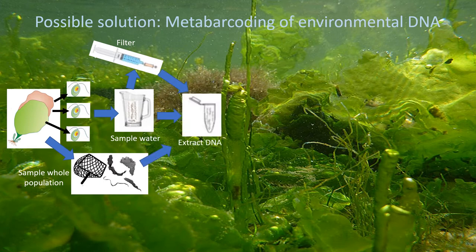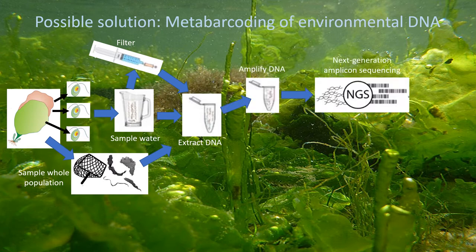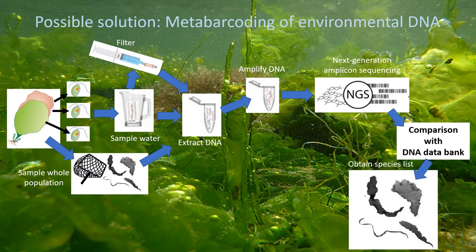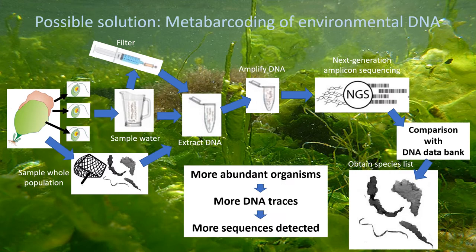Samples generated in such ways can be DNA extracted, the tufA gene can be amplified and sequenced, and the resulting sequences can then be compared with a suitable DNA database, which would allow us to obtain a species list for the sample. Such an approach might also allow estimation of taxon abundances, because most abundant organisms should leave more DNA traces behind.